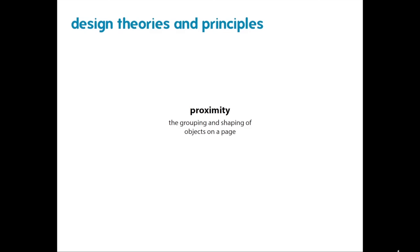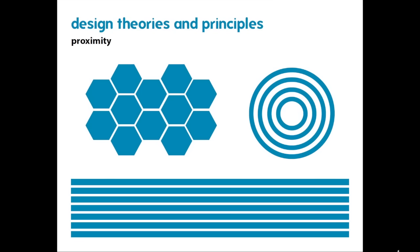Proximity is the grouping of objects on a page — keeping like things together and unlike things separate. Here are some abstracted forms, but by putting lines next to lines, hexagons next to hexagons, and concentric circles together, it becomes very clear that there are three different groupings. This would read much differently if everything were just spread out over the page with no overarching order. When working on any graphic design project, keep similar things together and different things apart.